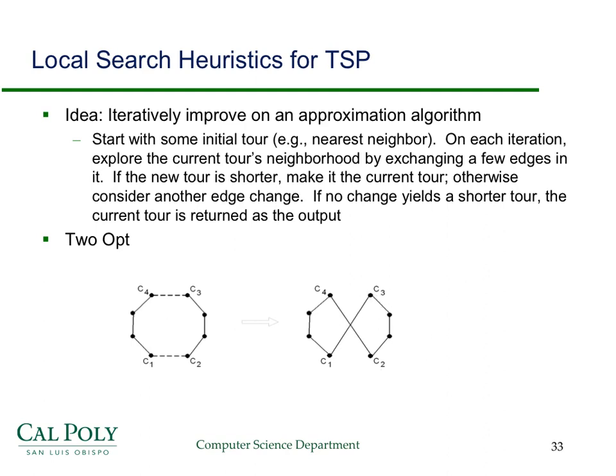The point of this screencast was to give you an idea of how approximation algorithms work and how we measure how well they perform. We looked at the traveling salesperson problem, found a 2-approximation for metric instances using twice around the tree, and briefly discussed iterative improvement methods. In a future screencast, I'll talk about a different approximation that performs even better.